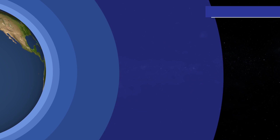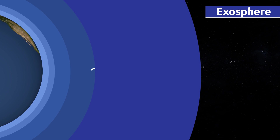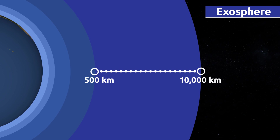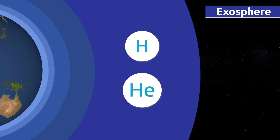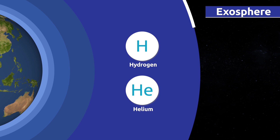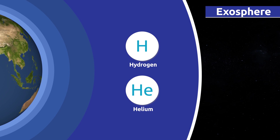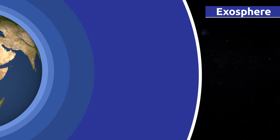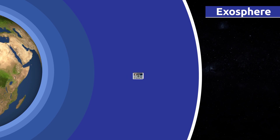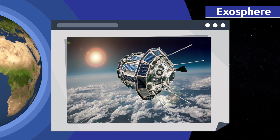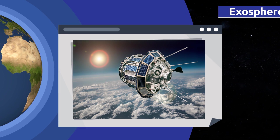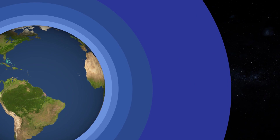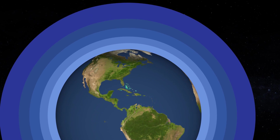The exosphere is the most distant layer from the Earth's surface, extending to an altitude of approximately 500 to 10,000 kilometers above sea level. Air in the exosphere is very thin — there's nothing but hydrogen and helium there. This layer is our outermost limit with space and protects us from solar flares. Satellites orbit the Earth within the exosphere. These are the five layers of the atmosphere!